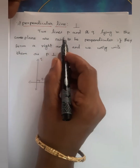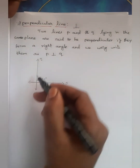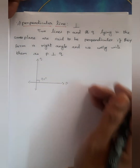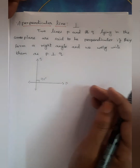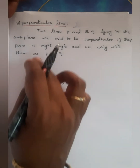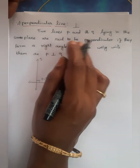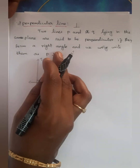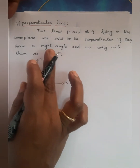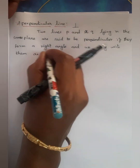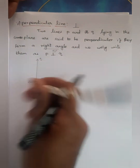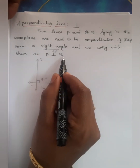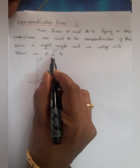Definition: two lines P and Q lying in the same plane — one plane, one paper. P and Q are set to be perpendicular if they form a right angle. A right angle is 90 degrees. 90 degrees is perpendicular. We write it as P perpendicular to Q.